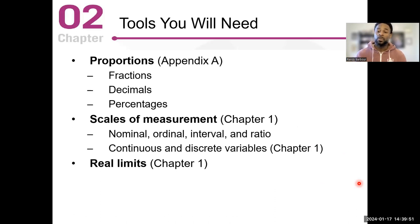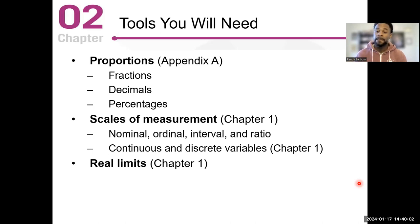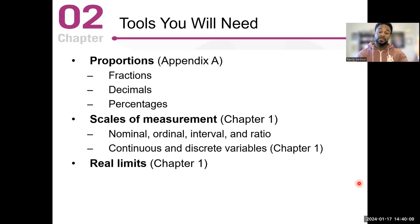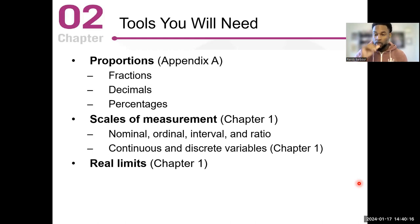Then we talk about the real limits. When we start talking about intervals, we'll have to use our real limits. The real limit for a continuous variable — so if our continuous variable was 50, our lower real limit would be 49 and a half, and the upper real limit would be 50 and a half. Those are our limits for 50. We'll talk about that when we discuss grouped frequencies moving forward.